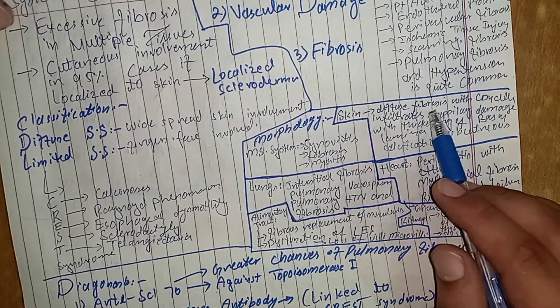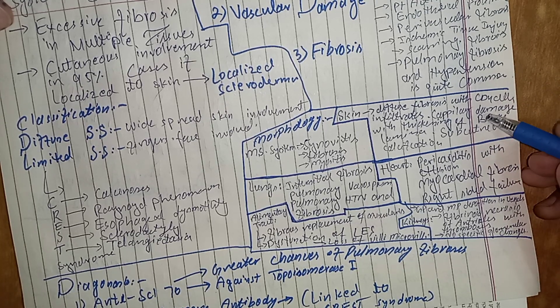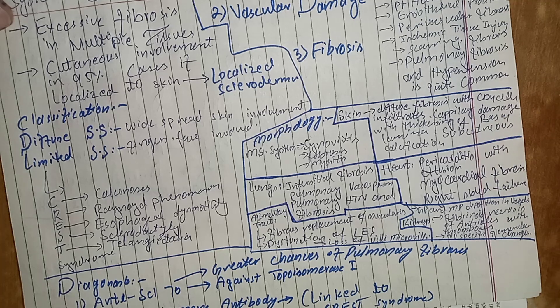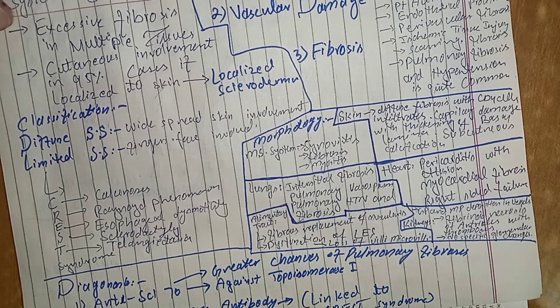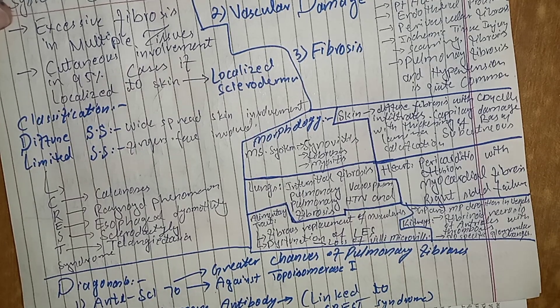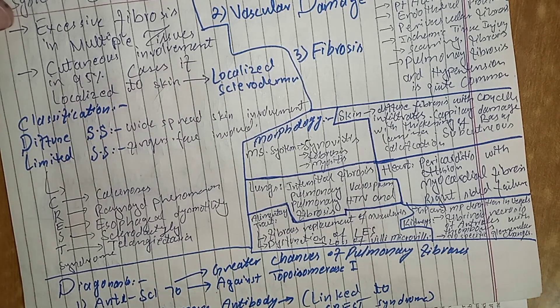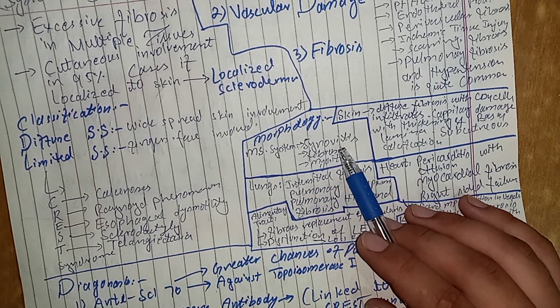So, in this condition there is diffuse fibrosis in skin with the involvement of CD4-T cells and there is capillary damage with the thickening of the basal lamina of capillary. There is dermal calcification and so on. Initially there is involvement of the fingers and face and then disease can spread to the multiple parts of the skin of the multiple body parts. And there is also involvement of musculoskeletal system. There is inflammation of synovial membrane or synovitis.